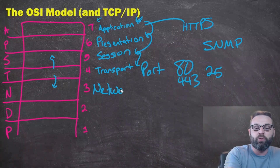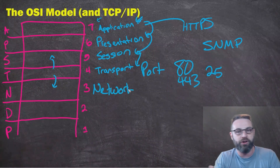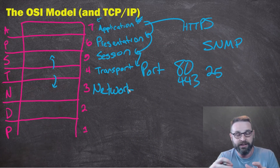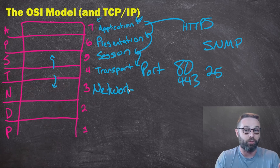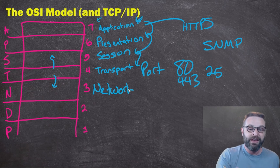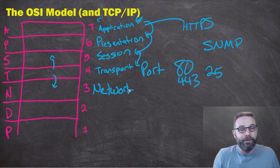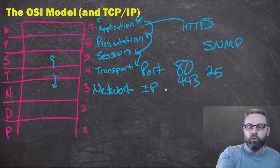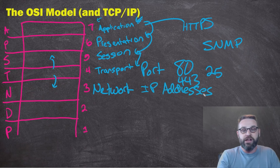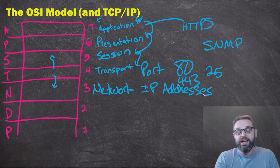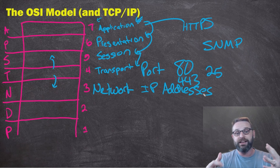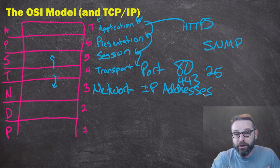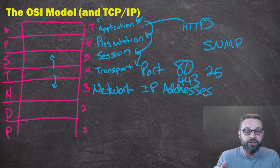Next up is the network layer. A lot of people argue this is the most important layer, though in my opinion they're all equally important — if one doesn't work, none of it works. But this is where a lot of people spend most of their efforts because this is where we actually define our IP addresses. In the network layer, you will see a source IP address and a destination IP address — who is sending this packet and who it's destined to, what computer and what server are interacting with each other.